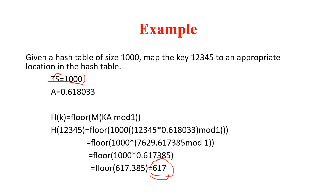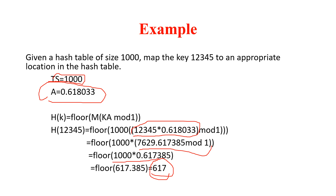For that calculation: first, select A value; then multiply A with the key; then mod with 1; then multiply with the table size; and finally take the floor value. Floor value always gives you the lower bottom value. So the result is index 617.